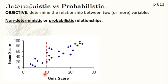Let's say a student got a quiz score of 10 out of 30. If you asked what the exam score would be, you can see one student who got 10 got 20% in the exam, while another student with the same quiz score got 60% in the exam. It's not a straightforward case — there is some randomness. Similarly, students who got 20 out of 30: one got maybe 50% and another got 80%, even though they both had 20 out of 30. Things are not so straightforward — there is randomness.